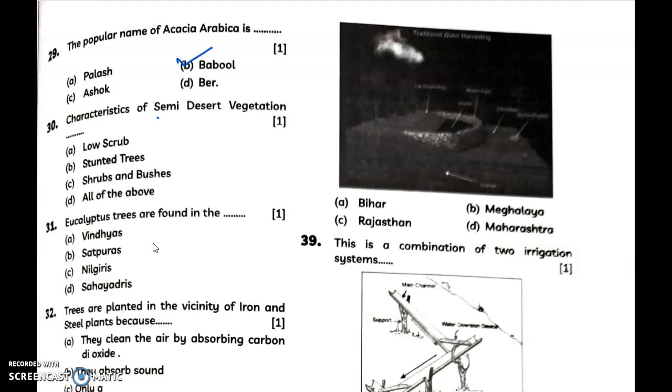Characteristics of semi-desert vegetation - answer is D, all of the above. And yes, an announcement: I'll be attaching important MCQ books in the link that is in the description box. You can also practice from them. Eucalyptus trees are found in answer C, Nilgiris.